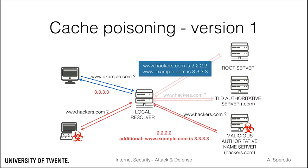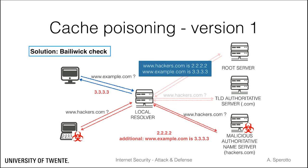This issue has been solved by introducing the so-called bailiwick check, meaning that the local resolver checks that the additional section only contains information about the same domain as the requested one. If this measure is in place, the local resolver will ignore updates about unrelated domains carried in the reply.